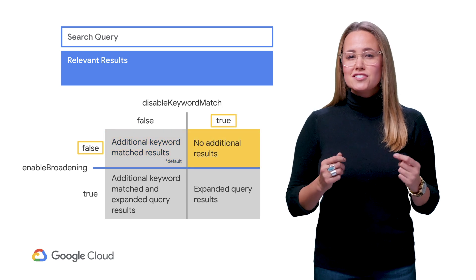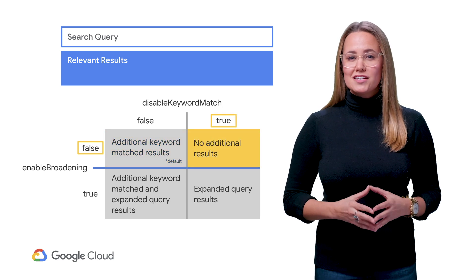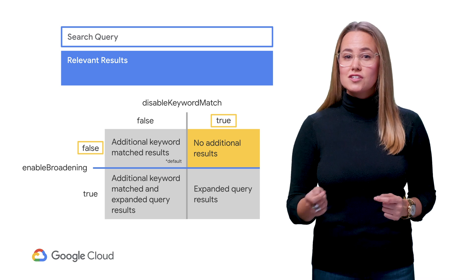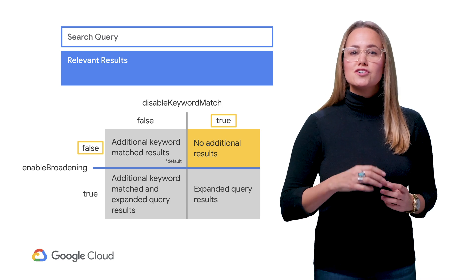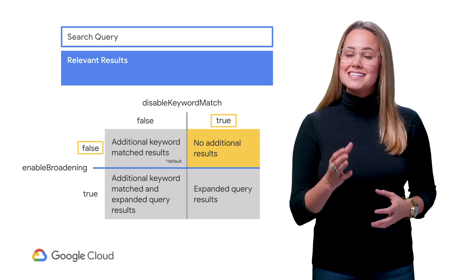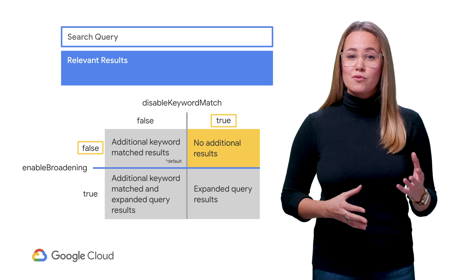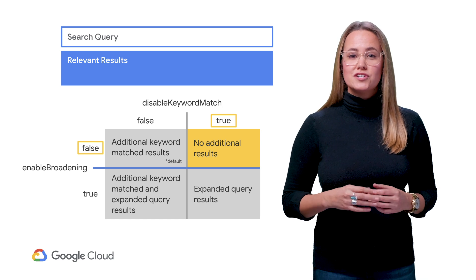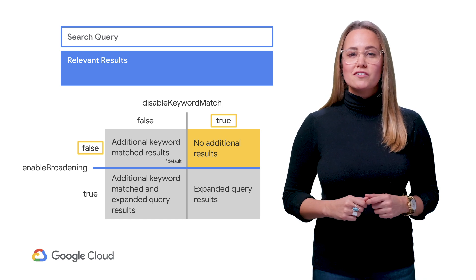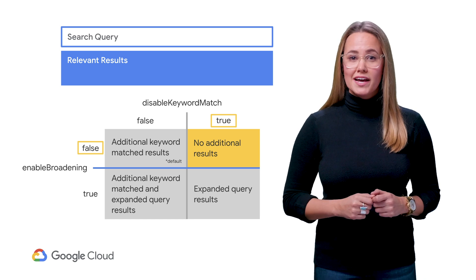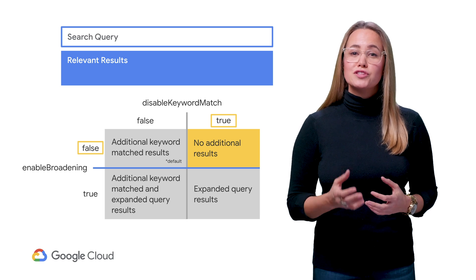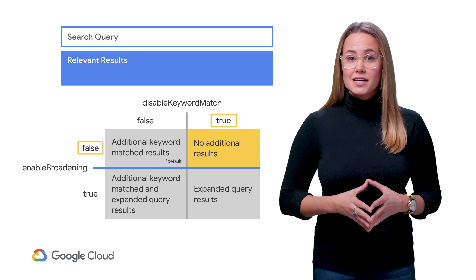If you change Disable Keyword Match to be true but leave Enable Broadening as false, your search results will include only machine learning recommended results, since keyword matching and broadening have both been turned off. This means only the most relevant jobs are displayed, but it's also the configuration with the fewest number of jobs returned.